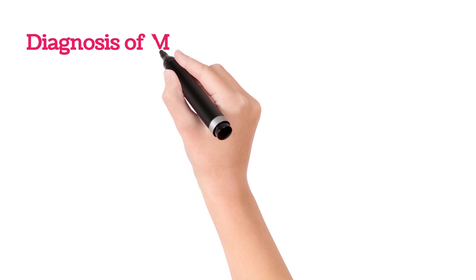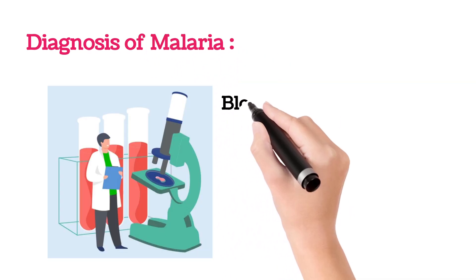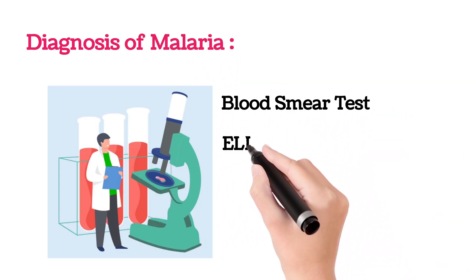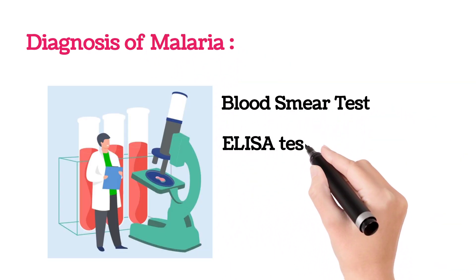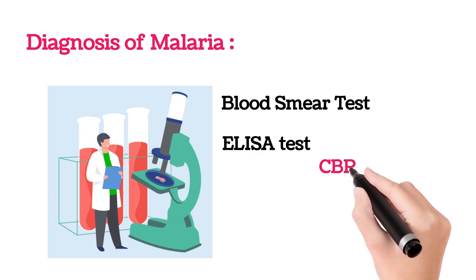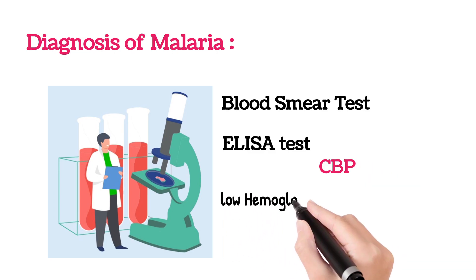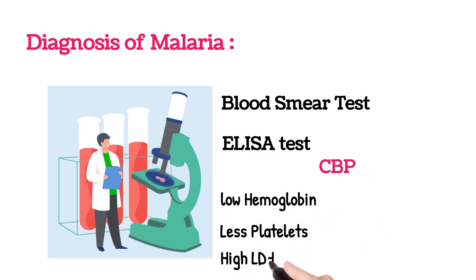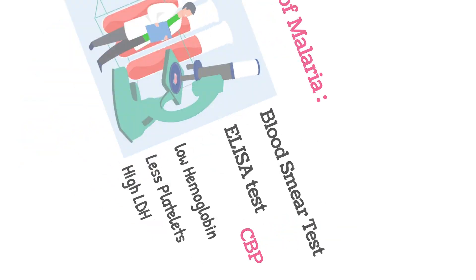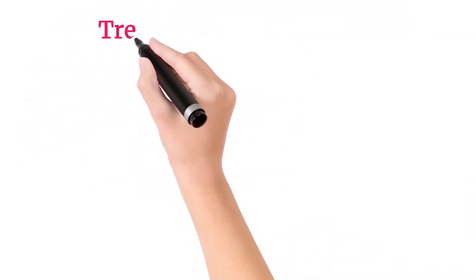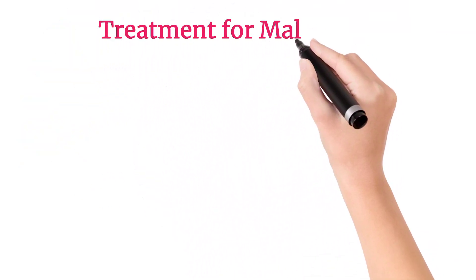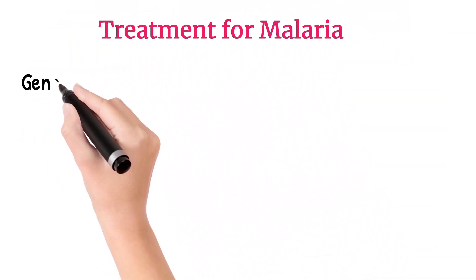Malaria is diagnosed by blood smear test, ELISA test, and complete blood picture. In the CBP, there will be decreased hemoglobin, decreased platelets, and there will be increased LDH.